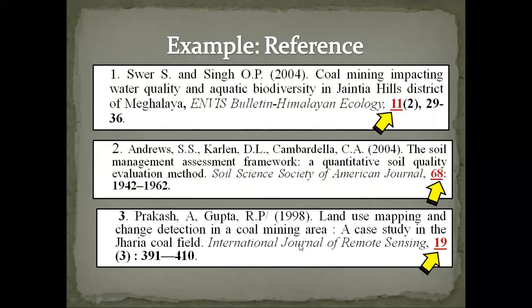Similarly, for the Soil Science Society of America Journal, volume 68 means 68 years since the inception of the journal. For the International Journal of Remote Sensing, volume 19 indicates the journal's inception was all the way back in 1980. So, for example, if a paper was published in 2020, the volumes would be 27, 84, and 40 respectively for these three journals.